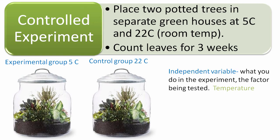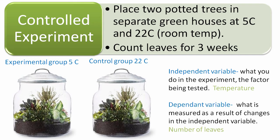Two terms you're going to hear a lot that are really important in scientific experimental design: the first is independent variable — it's the thing you are doing in the experiment, the factor you're testing. In this case, it's temperature. The dependent variable is what is being measured as a result of the changes in your independent variable. In this case, it's the number of leaves.